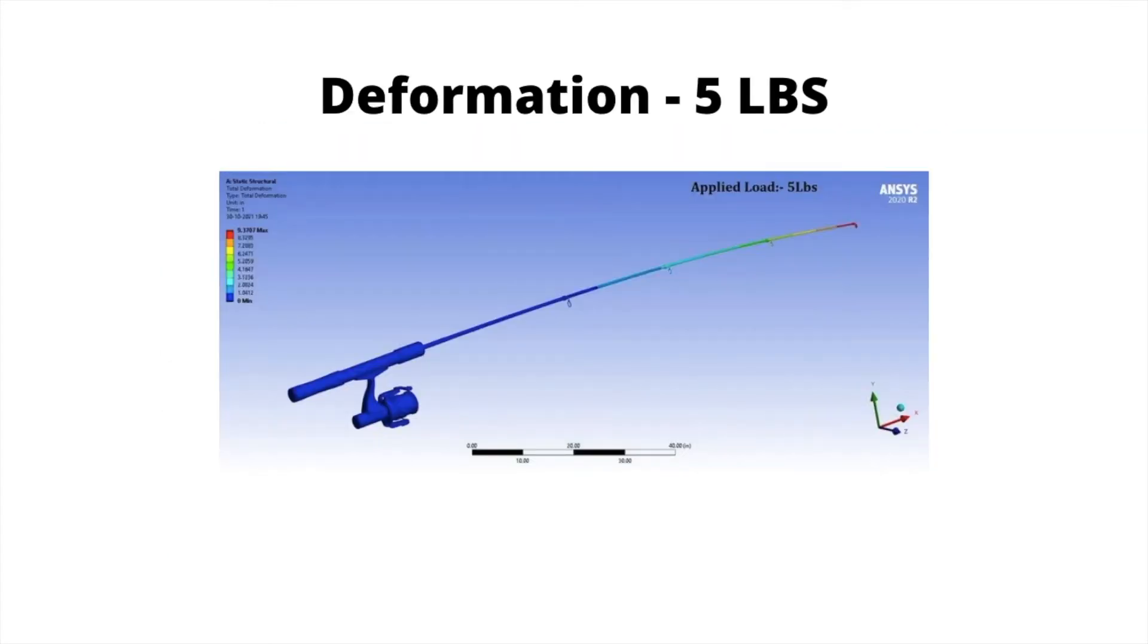Here is a deformation analysis. As you can see, the red is at the tip, so it deforms a lot more at the tip than it does where the reel is. Now, what does this five pounds of force do to the fishing rod, and how much does it bend? This is a depiction for after the stress is applied, it bends about this much.